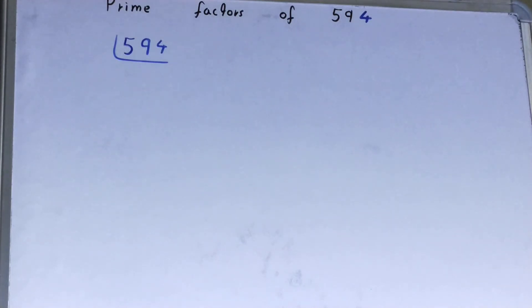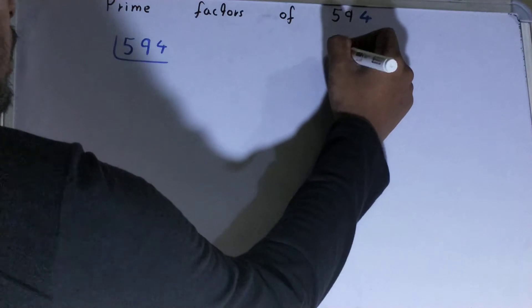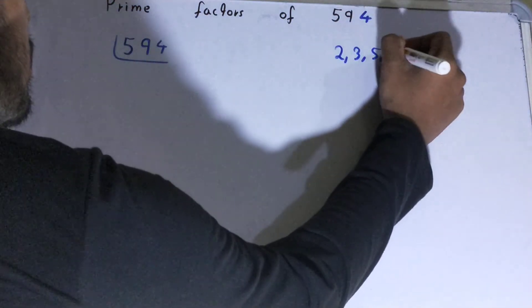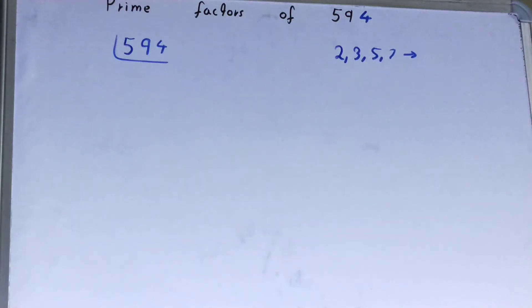Before solving this further, you must have an idea about what prime numbers are. Prime numbers are numbers that are divisible by 1 and the number itself, like 2, 3, 5, 7, and so on.